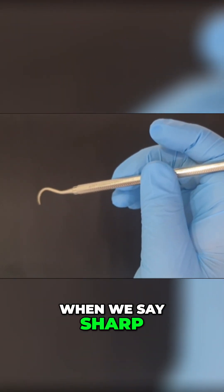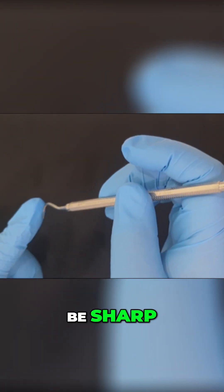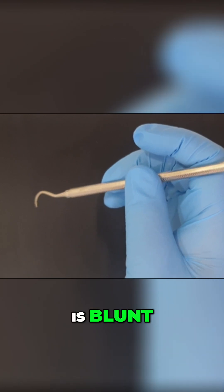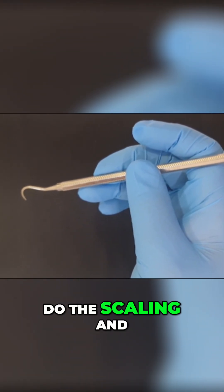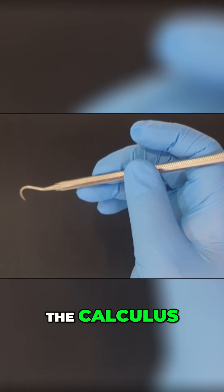When we say sharp, the cutting edge should be sharp. If the cutting edge is blunt, then we will not be able to effectively do the scaling, and instead of doing scaling, we will be burnishing the calculus.